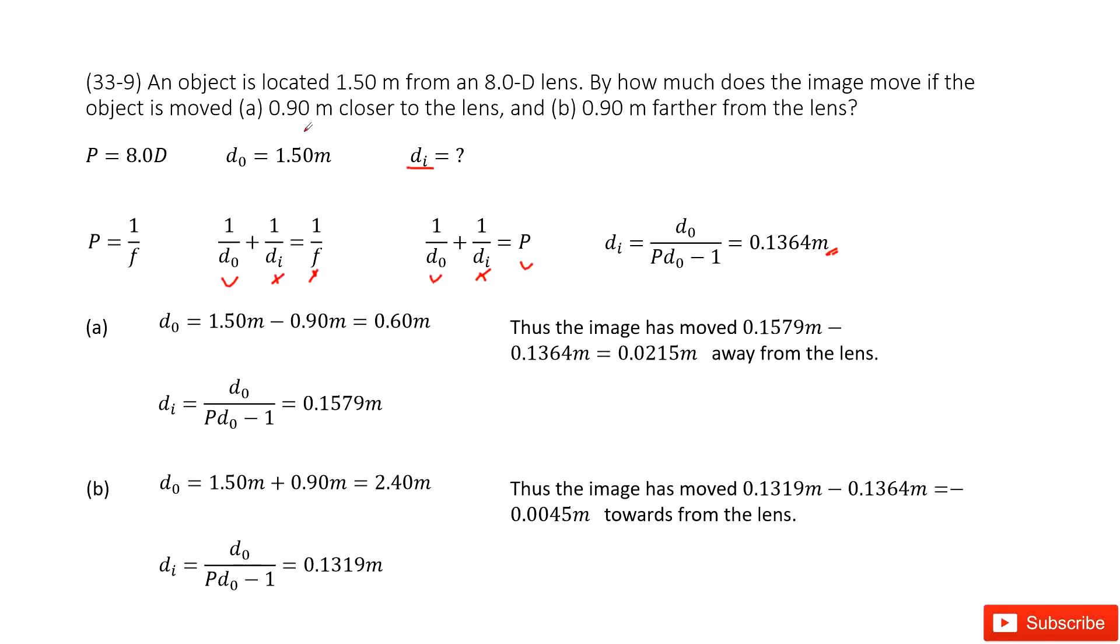Now, what if the object is moved 0.9 meter closer to the lens? If the object is moved, what is the new location for this object? So we use 1.5 meter minus 0.9 meter.